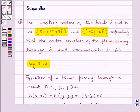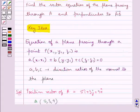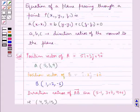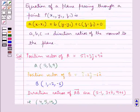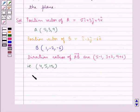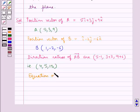In the question the plane passes through point A and is perpendicular to vector AB, so using this key idea we get the equation of a plane passing through point A